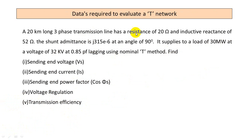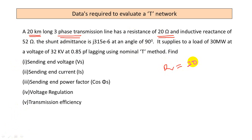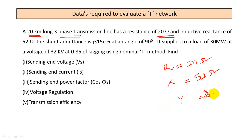Let us go into the problem, which is a very simple problem. As discussed in the last class, we have a 20-kilometer-long medium transmission line. It is a 20-kilometer three-phase line. Resistance R = 20 ohm, reactance X = 52 ohm. Admittance is given as j315 × 10⁻⁶ mho. The unit of admittance is mho.